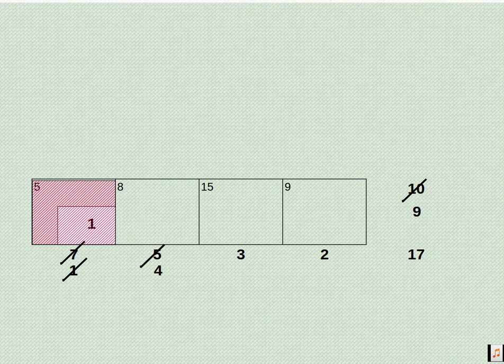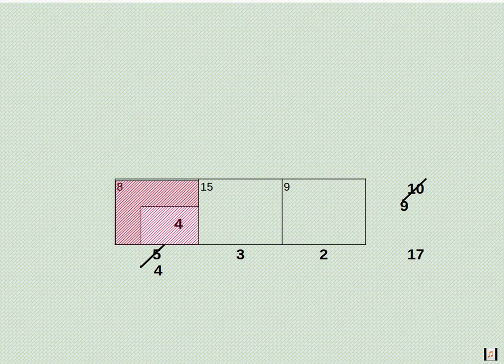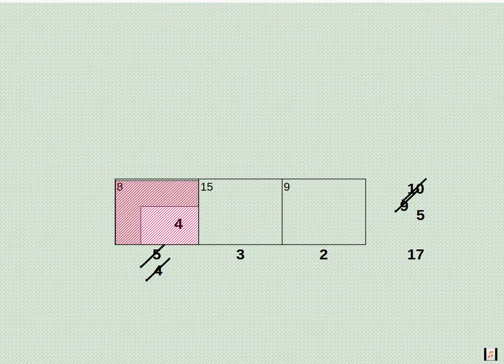This is our remaining table and here 8 is the minimum element, so here we allocate. For this we have to compare 4 and 9, 4 is the minimum, so we allocate 4 and column is satisfied, so column eliminated and from 9, 4 units we have taken, so we have 5 units balance.